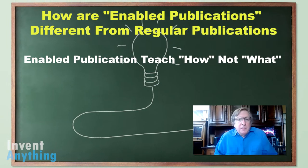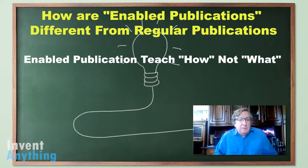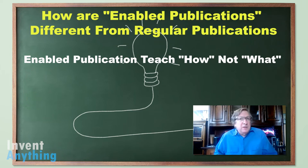How are Enabled Publications different from regular publications? Enabled Publications really need to teach how. Most publications talk about what. Marketing publications don't teach how things work. Scientific journals have lots of data and experiments, but they don't talk about how things work. So in most ways, teaching how is not in regular publications.